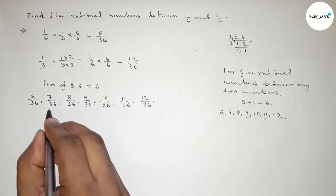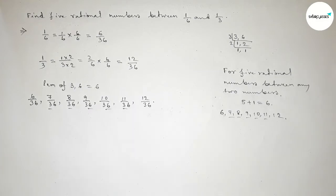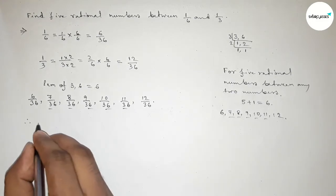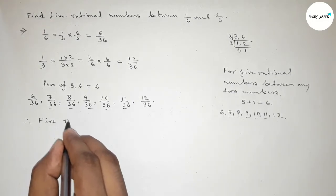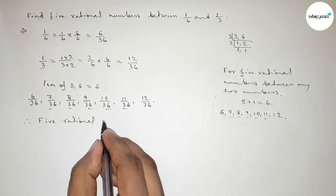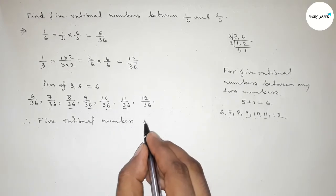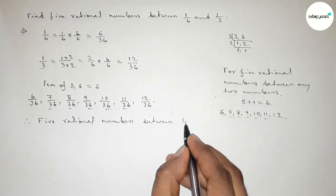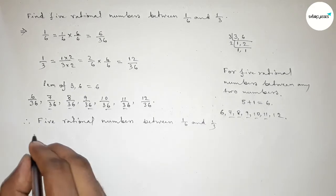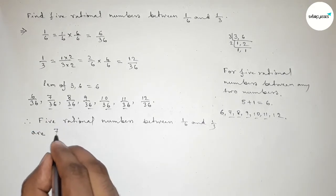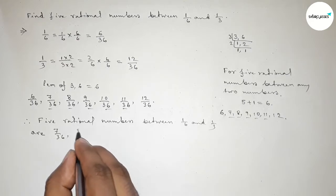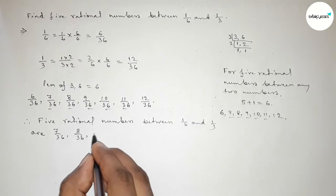So therefore, the required five rational numbers between 1 over 6 and 1 over 3 are: first one 7 over 36, 8 over 36, 9 over 36, 10 over 36, and last one 11 over 36.